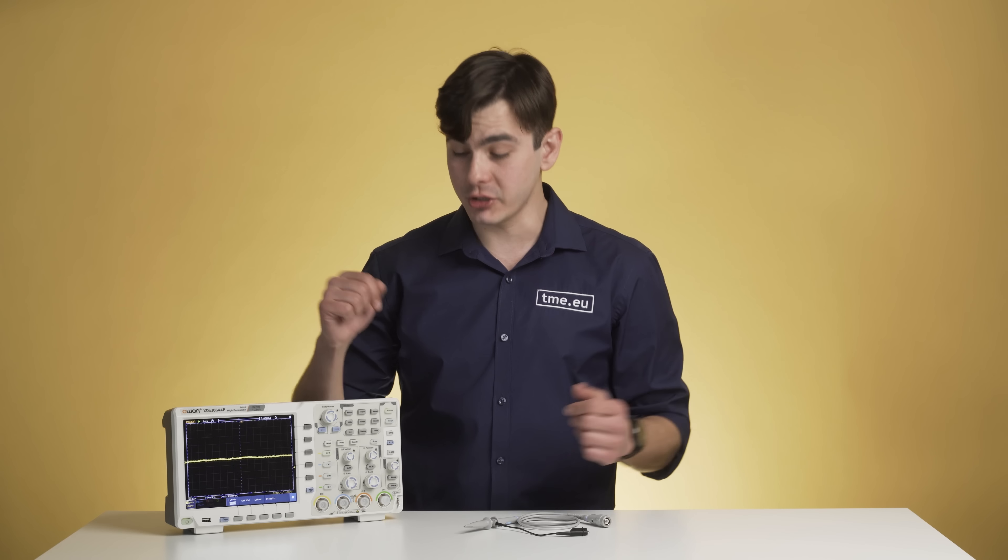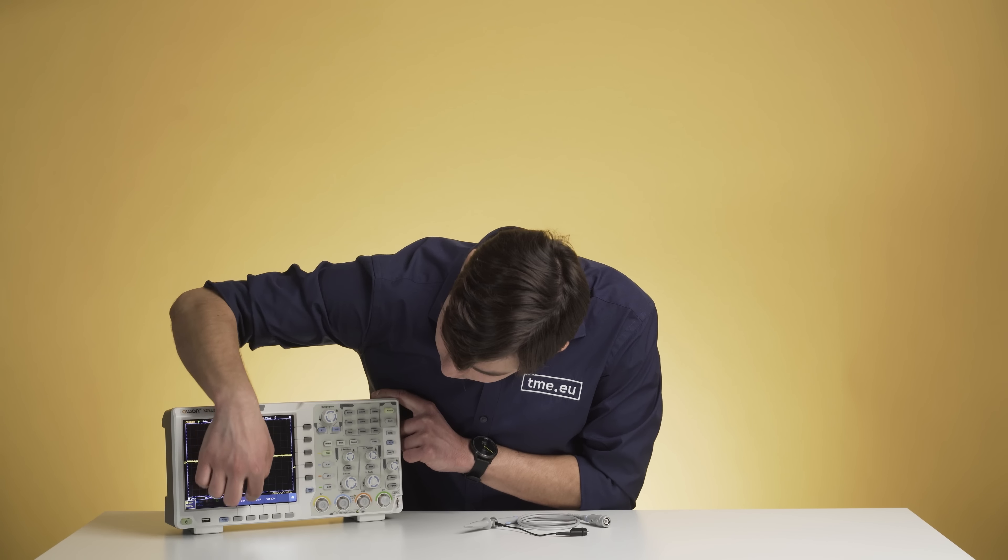First thing that you should do is to check if your scope and the probes are properly calibrated and compensated. This is crucial if you have a second-hand scope. Fortunately you don't need an additional signal generator, to open the device, or play with potentiometers. In modern oscilloscopes there is an automatic calibration function right here in the utility menu.